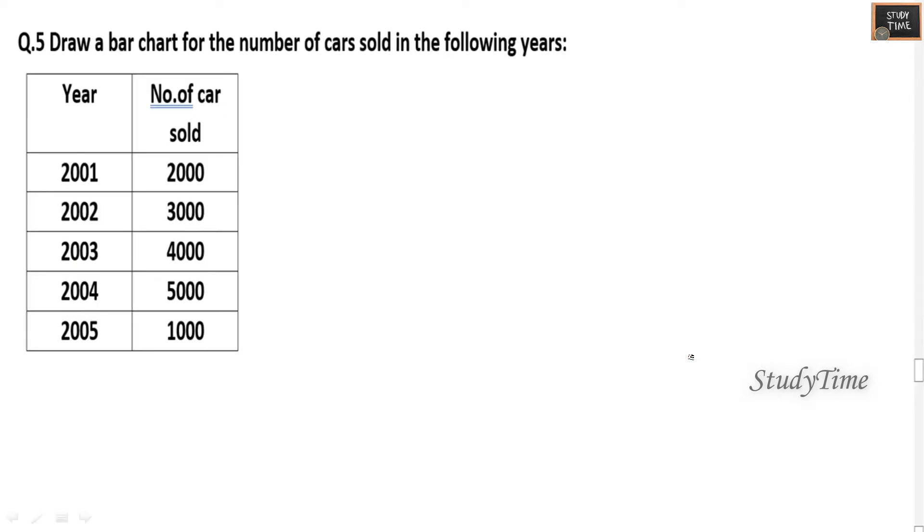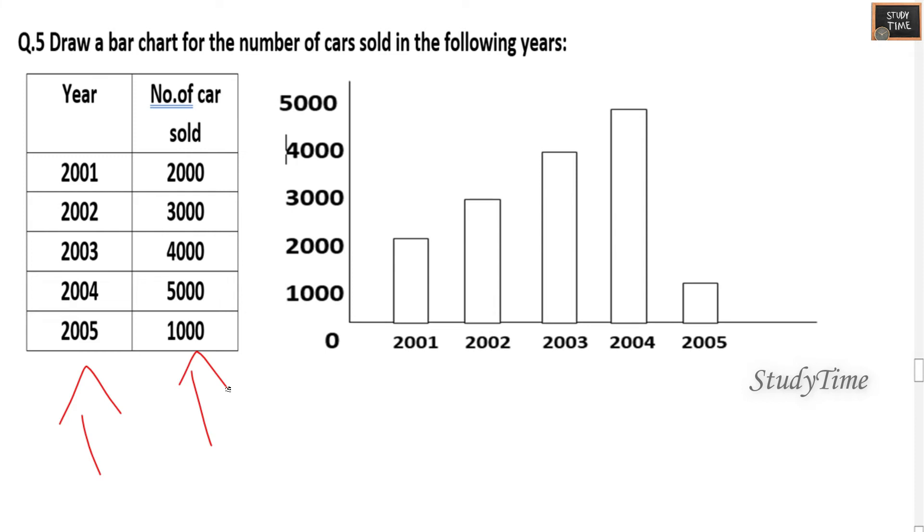Fifth question: draw a bar chart for the number of cars sold in the following years. Year is given and number of cars sold is given, so you have to draw a bar chart. This is the bar chart. So 2000 here, 3000 here. 2003 it is 4000. 2004 it is 5000. 2005 it is 1000. This is the bar chart for the given table.